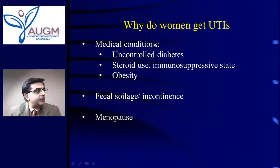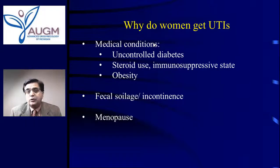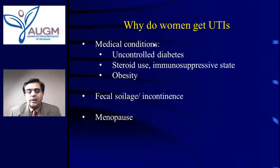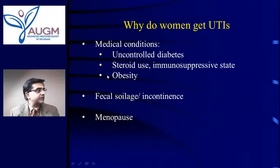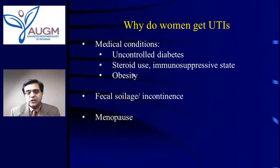There are medical conditions that predispose to bladder infection. The obvious one is diabetes — bacteria like sugar just like you and I do, and that can cause bladder infection symptoms. Steroid use and immunosuppression therapy compromise the immune system, which normally prevents bacteria from moving forward into the bladder, leading to a high likelihood of bladder infections. Similarly, obesity changes the local environment with increased secretions, moisture, and sweating, which can also predispose to bladder infections.